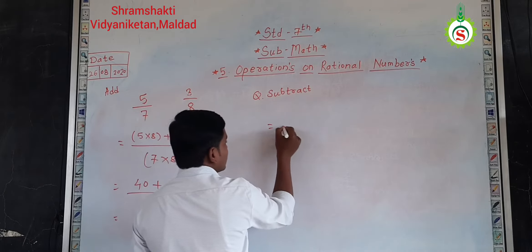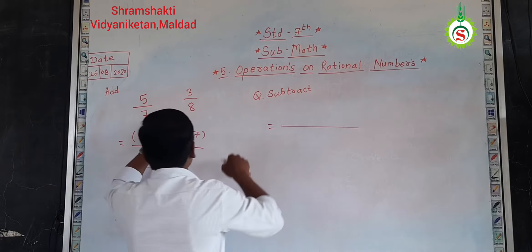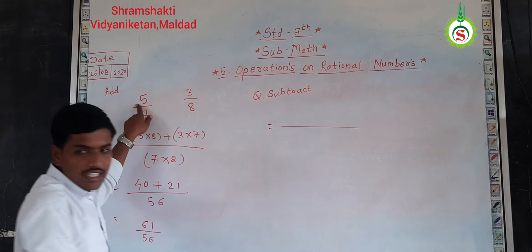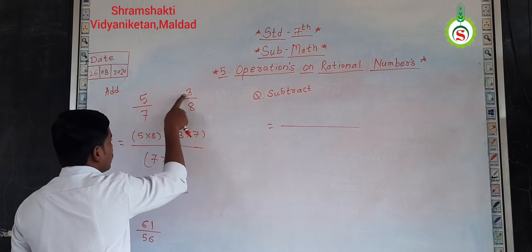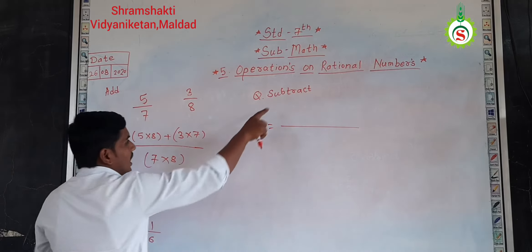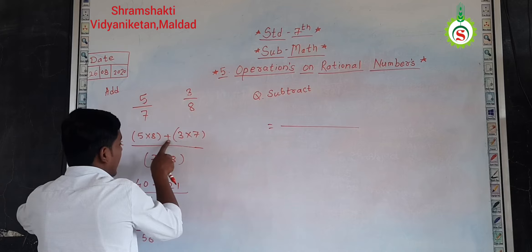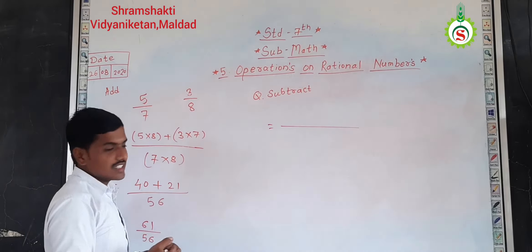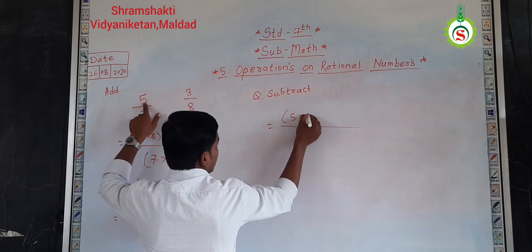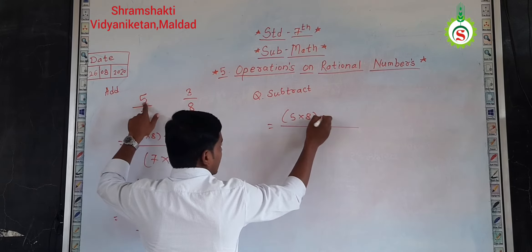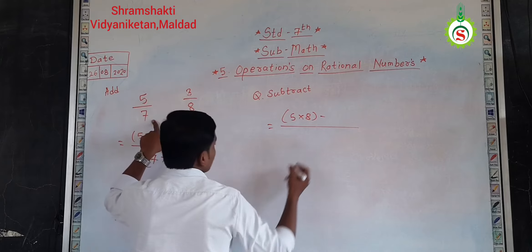So, again for the answer, numerator and denominator. So, at the numerator, what I will take? Cross multiplication of the numerator and denominator, numerator and denominator. But, as I will do the subtraction, so instead of addition, I will give the subtraction sign. So, cross multiplication: five into eight. Now I have to subtract, so I will give the minus sign. And again, three into seven.